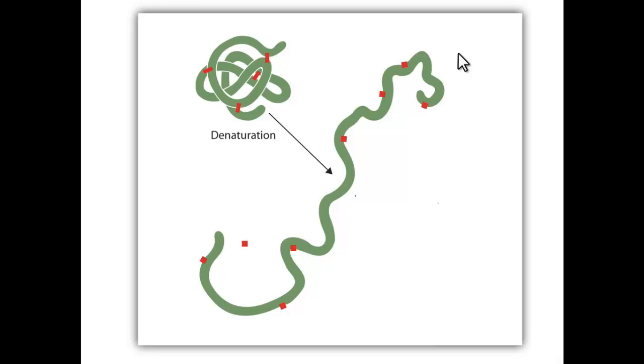So key points today. Denaturing is when the bonds that hold the protein in its three-dimensional shape are broken down. And it's often irreversible, occurred by high temperatures. Not by low temperatures, only by high temperatures and extremes in pH or other chemicals.